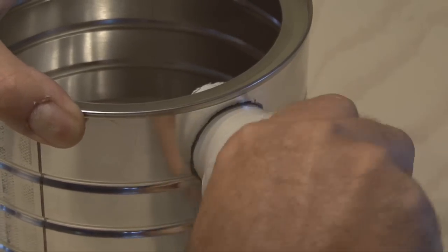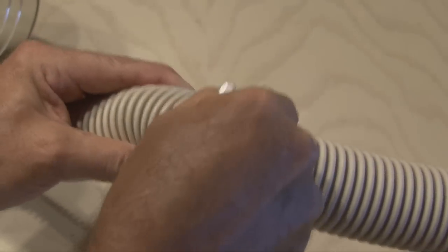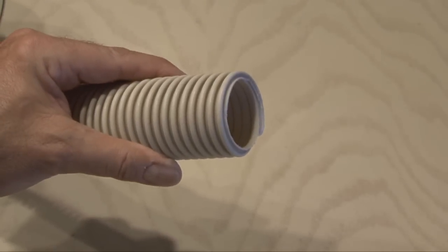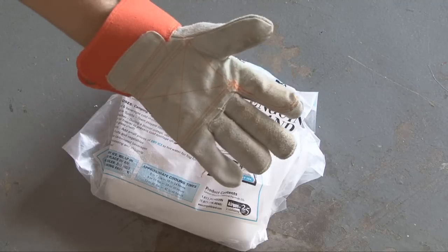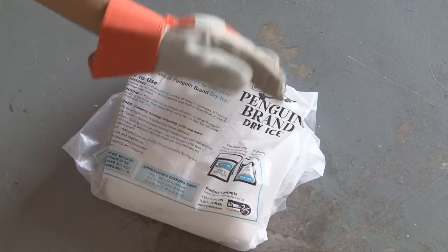If the hole is cut right, the pool hose will fit in snugly. Then I trimmed this hose down from 3 feet to about a foot. And now we need dry ice. You can get this at the supermarket or butcher shop. Don't forget to wear gloves because this is colder than cold.